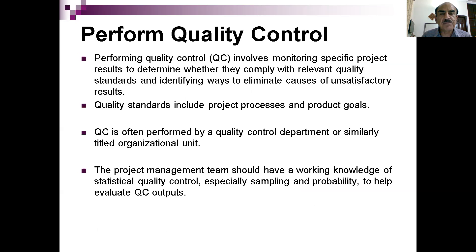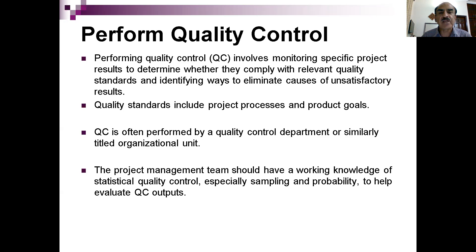The third and most important step is performing quality control. Once quality standards have been assured, we consistently monitor project results at the end of each project lifecycle phase or sub-phase. We identify unsatisfactory results, identify their causes, and take corrective actions right in time — because even if 100% quality assurance is done, we can still have quality problems at the end. This is normally done by the quality control department or similar organizational unit. The project management team should have a working knowledge of statistical quality control, especially sampling and probability, to help evaluate quality control outputs.